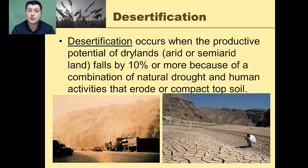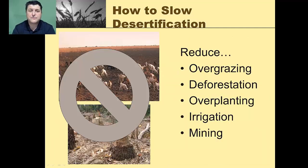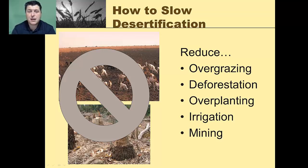Besides erosion and moisture control, we also have to protect soil from desertification. Desertification occurs when the productive potential of dry lands — arid or semi-arid land — falls by 10% or more due to a combination of natural drought and human activities that erode or compact topsoil, causing a once-productive area to become more like a desert. To slow desertification, we should reduce overgrazing, maintain forest cover, avoid overplanting, and minimize excessive irrigation or mining of a particular area.